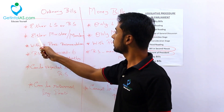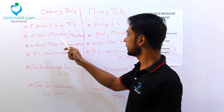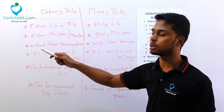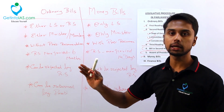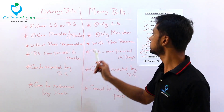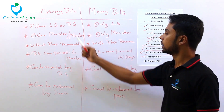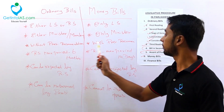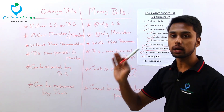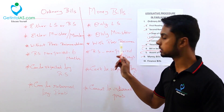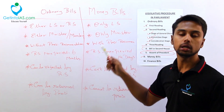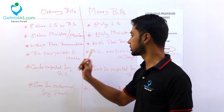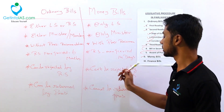Your ordinary bill can be introduced either by a minister or a member, which means it can be a government bill or a private member bill. But your money bill is strictly a government bill - that means only by a minister. Your ordinary bill can be introduced without the president's recommendation. But a money bill requires the recommendation of the president. For Rajya Sabha: ordinary bill has a maximum period of 6 months, money bill has a maximum period of 14 days.